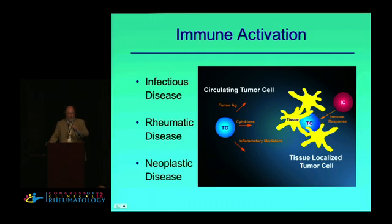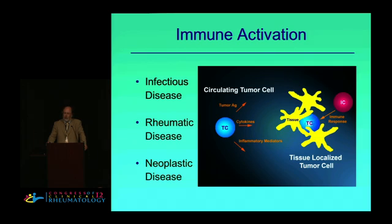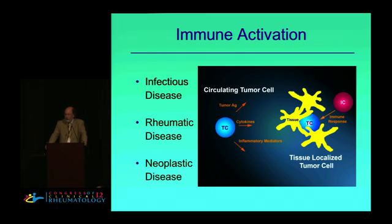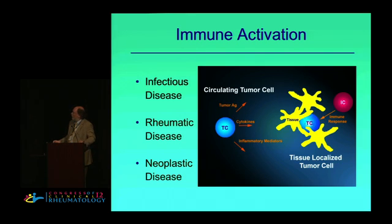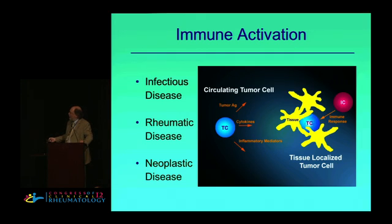So I'm going to be efficient and talk to you today about rheumatic manifestations of cancer. I think this is something obviously that we have to think about all the time. And as rheumatologists, we're really the experts in assessing the level of immune activation in a patient in terms of laboratory studies and clinical assessment. But obviously the problem is that the mechanisms of immune activation that occur in infectious disease, rheumatic disease, and neoplastic disease are frequently the same mechanisms, and so the resulting laboratory abnormalities and clinical manifestations overlap.